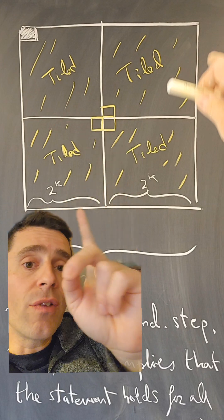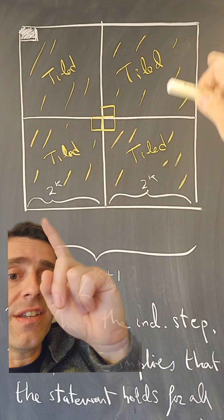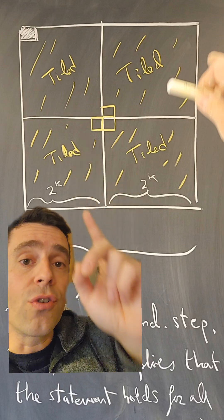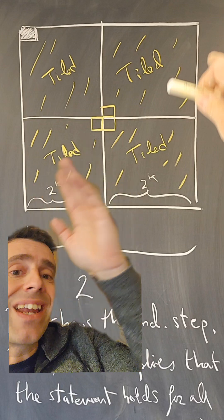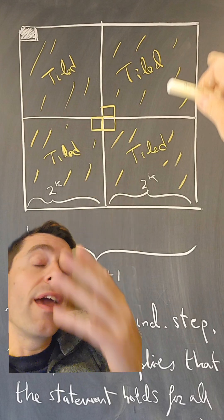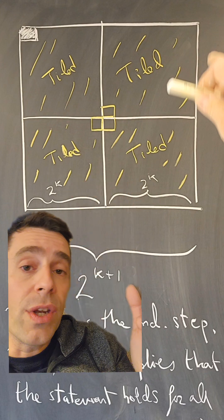And now each one of those squares has one corner removed. Then by the induction hypothesis, those are 2 to the k by 2 to the k, those can be tiled because a corner is removed, and therefore I can also tile the 2 to the k plus 1 chessboard, and that proves the induction step, and therefore by induction you can do it in all cases.